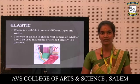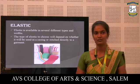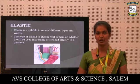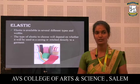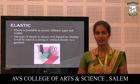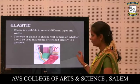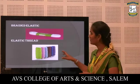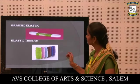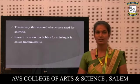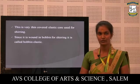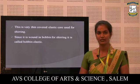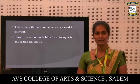Next, elastic. Elastic is available in several different types, and the type of elastic to choose will depend on whether it will be used in a casing or stitched directly to a garment. These are the braid elastic and elastic thread. This is a very thin covered elastic cord used for shirring. Since it is wound in a bobbin for shirring, it is called bobbin elastic.